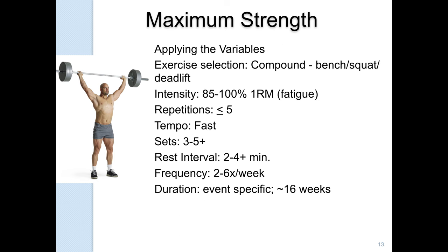For max strength variables, you use compound movements — bench press, squat, deadlift — that's powerlifting. You're doing five reps or less, possibly sets of two or three. You want to move fast even though the weight may not be moving fast. You can do more sets to override the Golgi tendon organ and train it to sustain high amounts of tension. Rest interval needs to be longer to allow energy replenishment and nervous system recovery. For frequency, you can split lower body one day and upper body another, doing two lower body and two upper body max strength workouts per week, focusing on movement patterns.